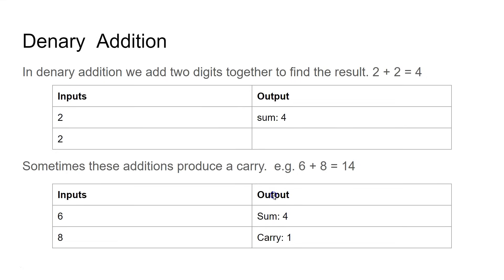Before we start on computers and binary, let's have a quick look at how we do it as human beings. Normally we add using denary, which is decimal. So for instance, if we do 2 plus 2 it equals 4. The maximum number we can have in any one column in a decimal number is 9. We go from 0 to 9 and after that we start to carry over.